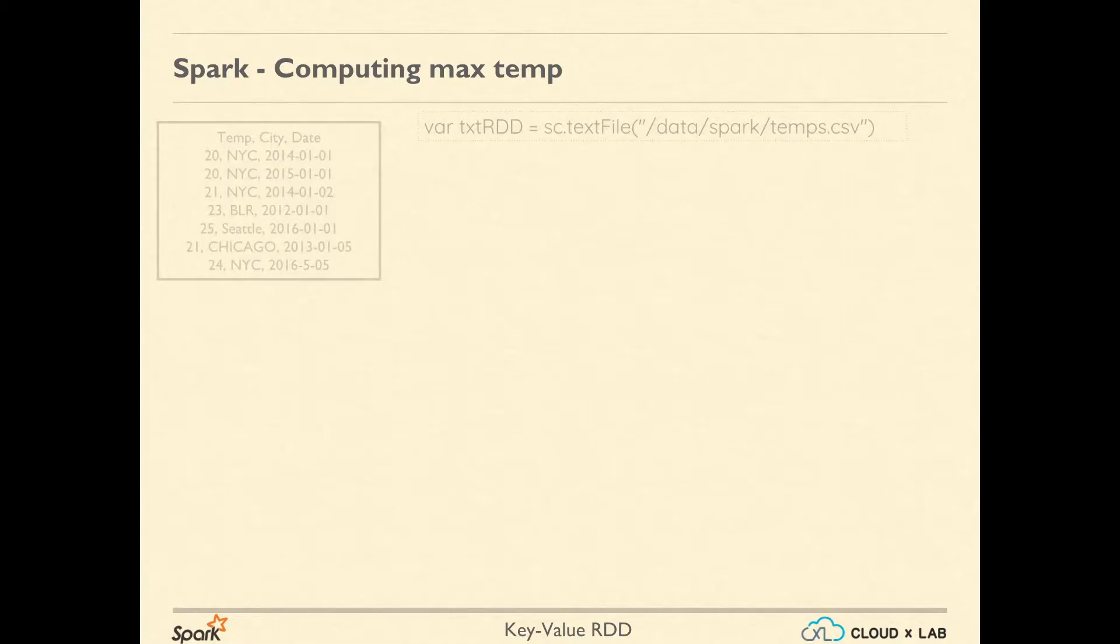Let's see. First we created an RDD with the name txtRDD from a file located in HDFS at /data/spark/temps.csv. Please note that the data in this file is comma separated.